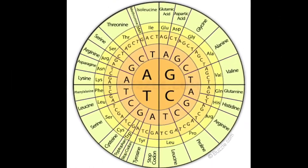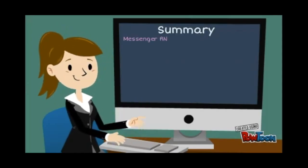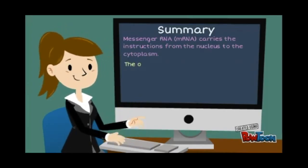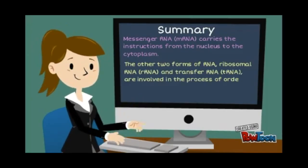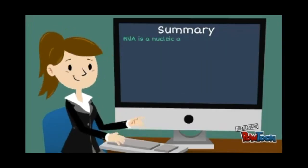Now let's summarize what we've learned. Messenger RNA or mRNA carries the instructions from the nucleus to the cytoplasm. The other two forms of RNA, ribosomal RNA or rRNA and transfer RNA or tRNA, are involved in the process of ordering the amino acids to make proteins. RNA is a nucleic acid like DNA but differs slightly in its structure.